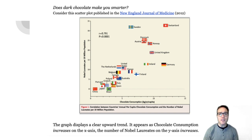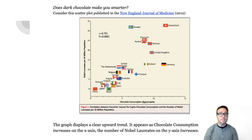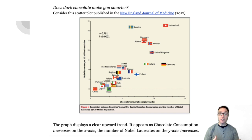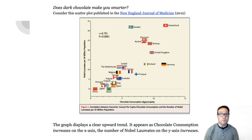Why were only these countries displayed? Including more countries may drastically change the plot. Could it be that wealthier countries can afford more chocolate and spend more on education? Could top scholars native to countries such as China, Brazil, Japan, etc. be relocating to other countries to pursue their education and do their research? Or could it just be a coincidence?